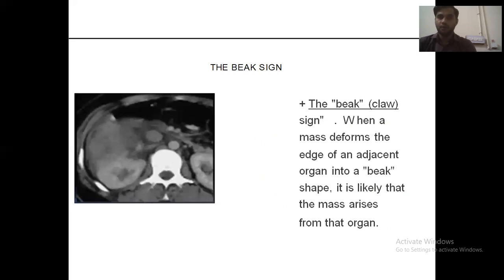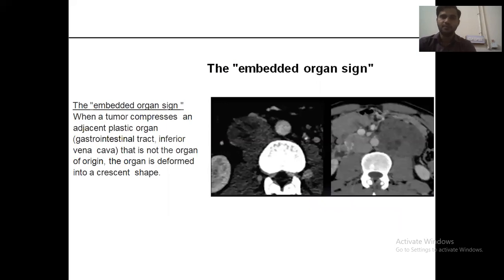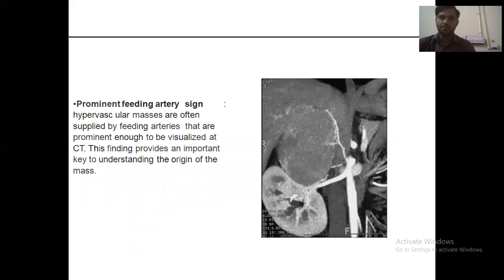Beak sign: when the mass deforms the edge of the adjacent organ into a beak shape, it is likely that the mass arises from that organ. Embedded organ sign: when a tumor compresses an organ that is not the organ of origin, that organ is deformed into a crescent shape. Prominent feeding artery sign: hypervascular masses are often supplied by feeding arteries prominent enough to visualize on CT, providing an important key to understanding the origin of the mass.